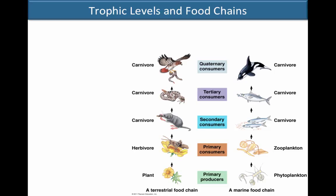This is a nice way to look at how energy moves between organisms. The one problem with food chains is that they assume every energy transfer moves in a single linear direction — you'd never have a tertiary consumer eating a primary consumer. So it's limited in that way, and often a better approach is to use a food web.